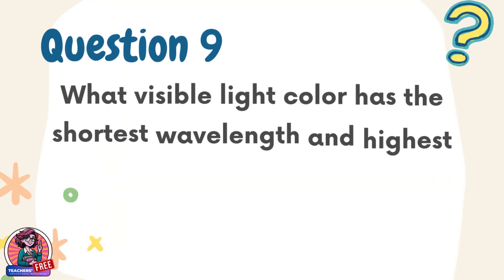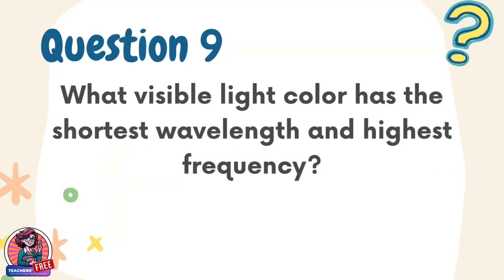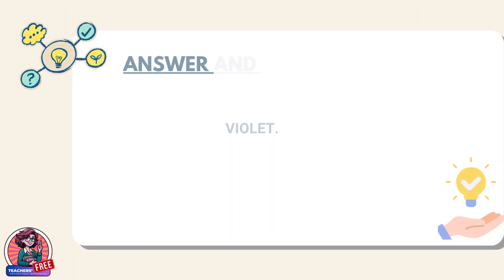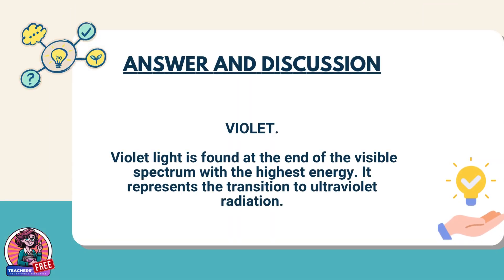Question 9. What visible light color has the shortest wavelength and highest frequency? Answer: violet. Violet light is found at the end of the visible spectrum with the highest energy. It represents the transition to ultraviolet radiation.